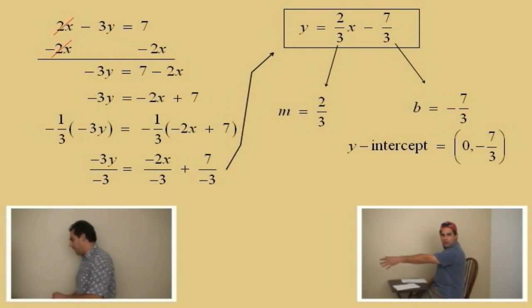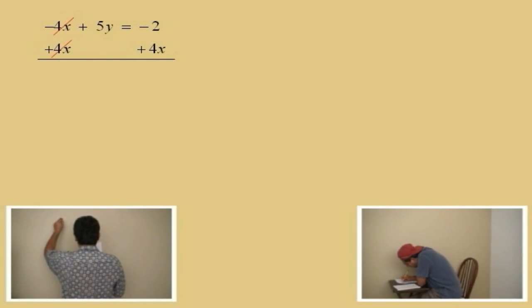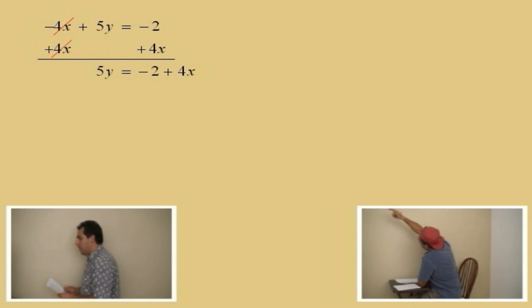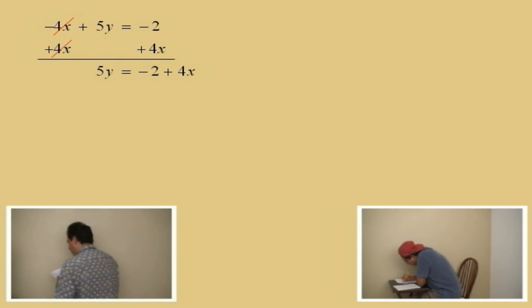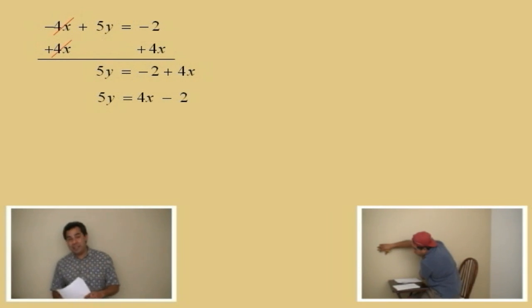Let's take this one here. Negative 4x plus 5y equals negative 2. What do we do, Charlie? Add 4x to both sides. So we're going to add 4x. Negative 4x plus 4x is 0 — those cancel out — leaving you with 5y. So 5y equals negative 2 plus 4x. By our commutative property, negative 2 plus 4x is the same as 4x plus negative 2, which is exactly the same as 4x subtract 2. That's from pre-algebra, so we should be able to understand that.